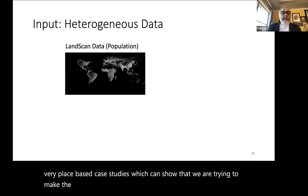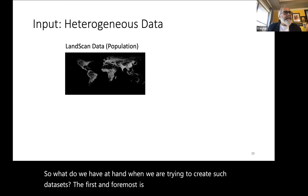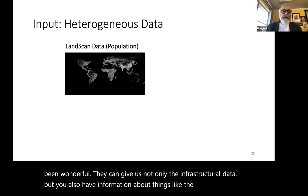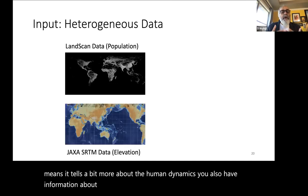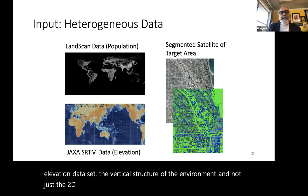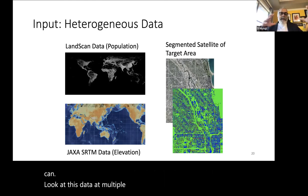What do we have at hand when trying to create such datasets? First and foremost, satellite data: they give us not only infrastructural data but also population information (telling us about human dynamics), non-urban features like elevation, and the vertical structure — not just 2D landscape. This data can be examined at multiple scales, from global down to a very narrow neighborhood scale.